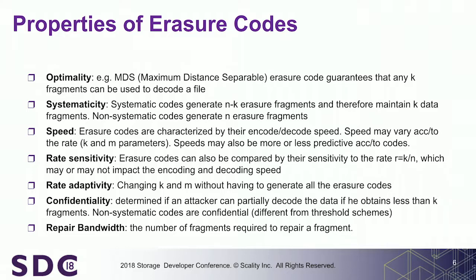Another interesting property is adaptivity: the ability to change K and M without having to regenerate everything. Confidentiality: non-systematic codes are different from threshold schemes. The difference is that with a threshold scheme you can always decode, while with an erasure code, the code will refuse to decode — which is why a threshold scheme is a cryptographic primitive and an erasure code is not, though functionally they are almost the same. Finally, repair bandwidth: how many fragments do you need to repair a missing fragment.